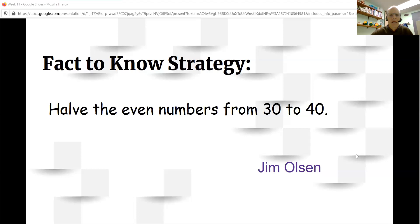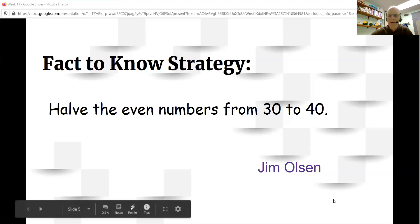This is like a mental math strategy, but since it's limited to the numbers that are even between 30 and 40, we call it a fact-to-know strategy. Let's look at some examples.